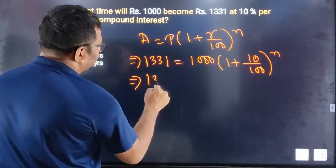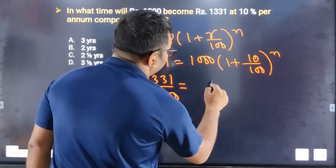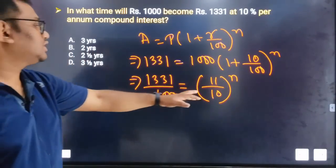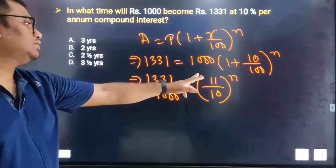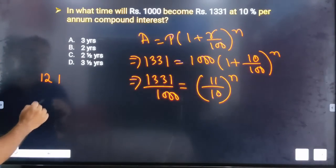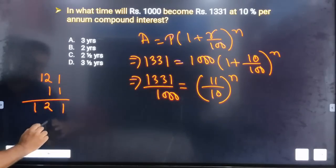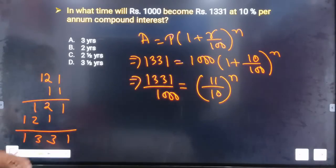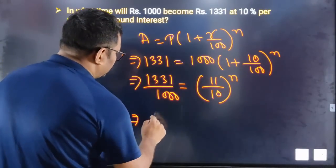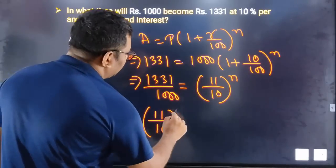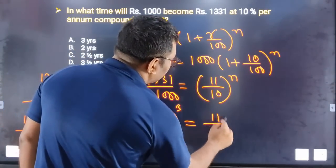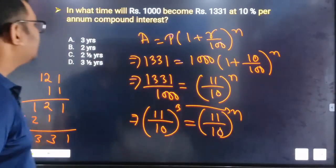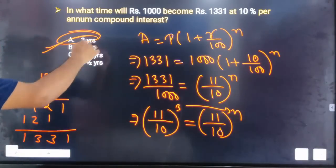So 1331 divided by 1000 equals (11 divided by 10) to the power N. Now 11 cubed equals 1331, so 1331 divided by 1000 equals (11/10) to the power 3. Since the base is the same, N equals 3. Therefore option A is your correct answer.